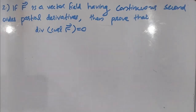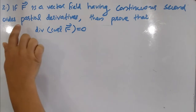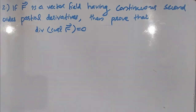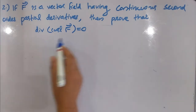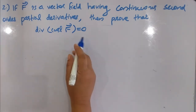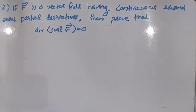In this class, we will discuss some problems. The first question is: if vector F is a vector field having continuous second order partial derivatives, then prove that divergence of curl of F equals 0.